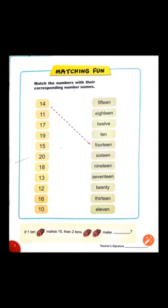Next is 17 — S-E-V-E-N-T-E-E-N. You will match 17 to number name 17. Next is 19 — N-I-N-E-T-E-E-N. 19 کو number name 19 کے ساتھ match کرنا ہے۔ آگے 15 — F-I-F-T-E-E-N. You will match 15 to its number name.